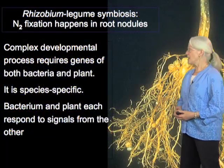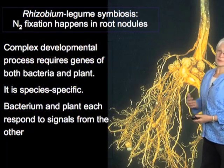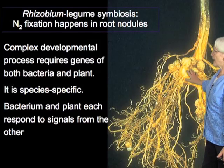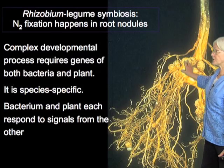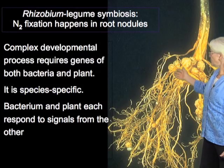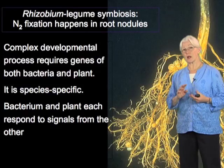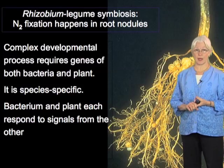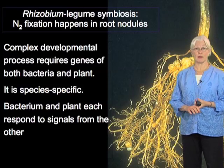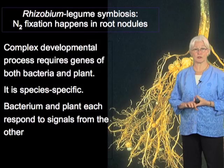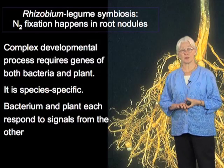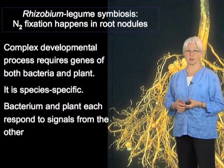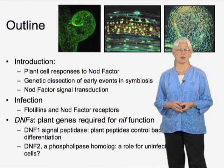By way of review, the rhizobium symbiosis happens in organs called root nodules. Within these nodules, bacteria are able to fix nitrogen and provide that to the plant for nutrition. This is a complex developmental process that goes through a number of stages. It is species-specific, and importantly, bacterium and plant each respond to signals from the other.